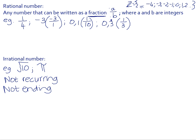So you cannot write irrational numbers as a fraction. All cube roots of non-perfect cubes and fourth roots of non-perfect fours — like the fourth root of two — all of those would be irrational numbers.